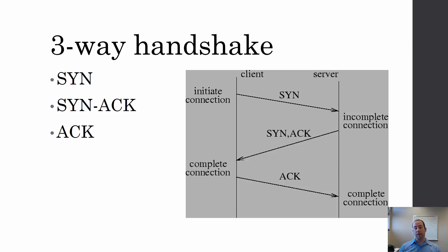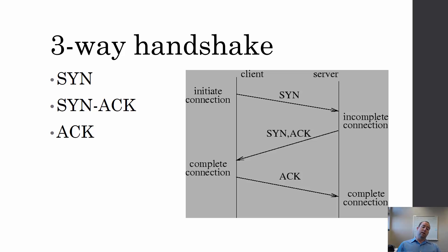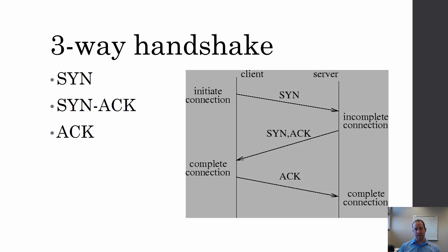The three-way handshake is three messages sent back and forth between the client, or the sender, and the server, or the receiver. This three-way handshake is used to set up the connection. Think of it like picking up a phone — the phone rings, the receiver says hello, you say hello back, and you're good to go. The first message from the client to the server is a SYN — S-Y-N — synchronize.